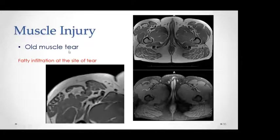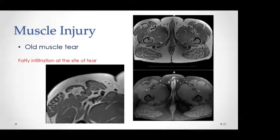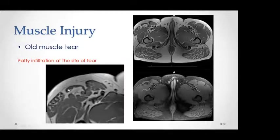Chronic muscle injuries, as mentioned earlier, don't show the edema or fluid cleft changes. What you see with chronic muscle tears is just muscle atrophy with fatty infiltration, as seen here in this patient with right rectus femoris chronic tear — just fat infiltration of the muscle.